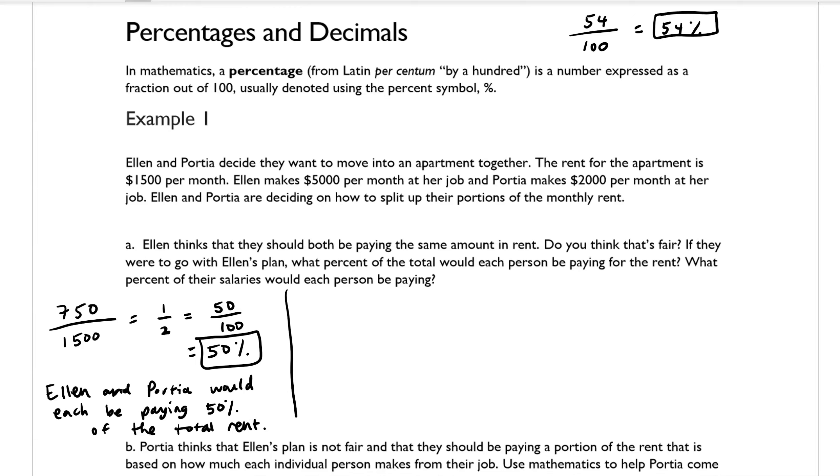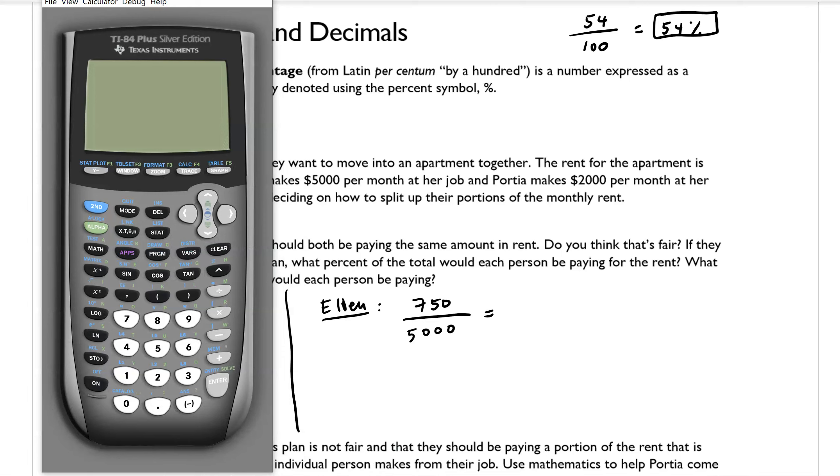The second question is asking something slightly different. It says, what percent of their salaries would each person be paying? So let's look at Ellen. She would be contributing $750, and her overall monthly income is $5,000.